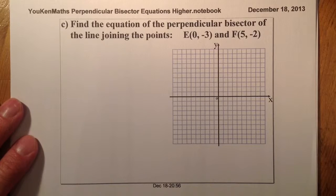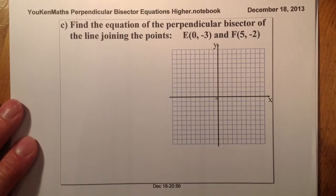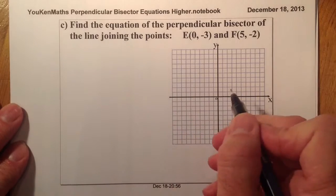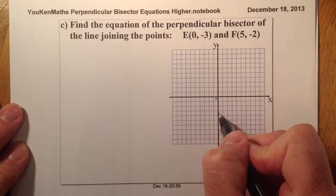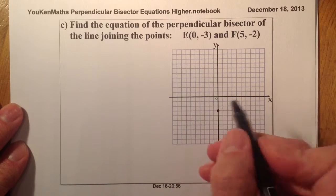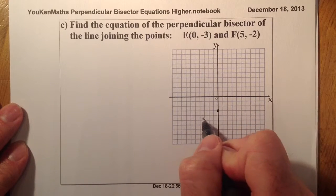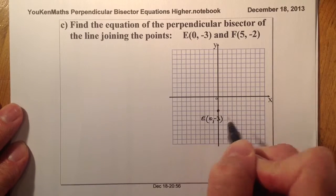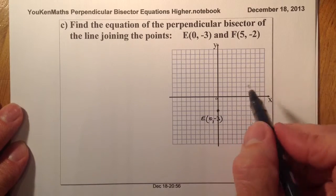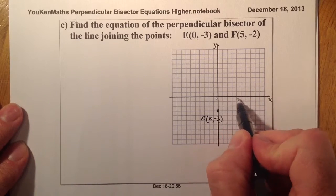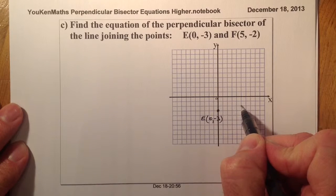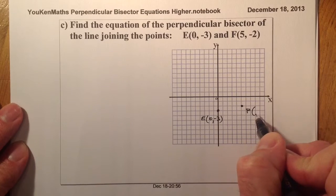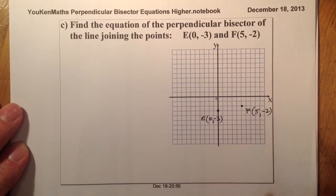Let's look at question 3. Let's plot the points: E is at (0, -3), and point F is at (5, -2) — so let's go to 5 and minus 2, which should be there. That's point F at (5, -2).